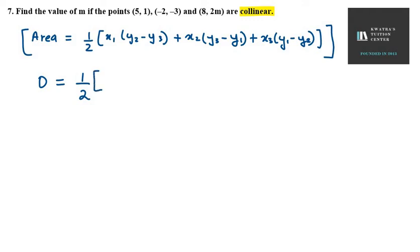Now we have to apply this formula and find the value of m. First, what is our x1? It is 5. What is our y2? It is minus 3. What is our y3? It is 2m. So we have all the values. Now we have x2, which is minus 2. Now we have y3 minus y1. y3 is 2m, y1 is 1 only. Plus x3, which is 8. y1 is 1, y2 is minus 3.